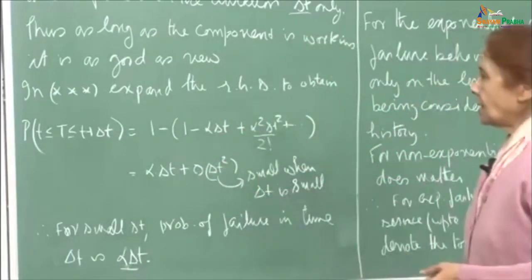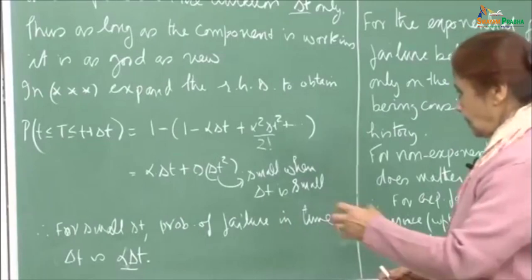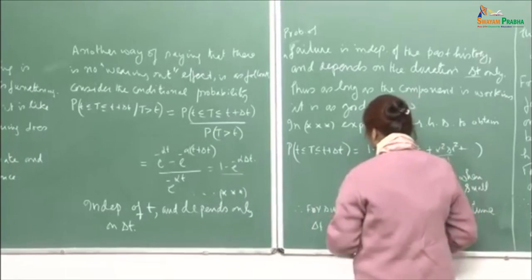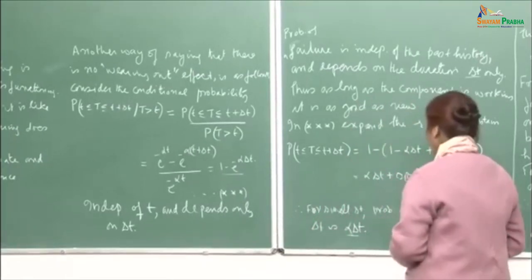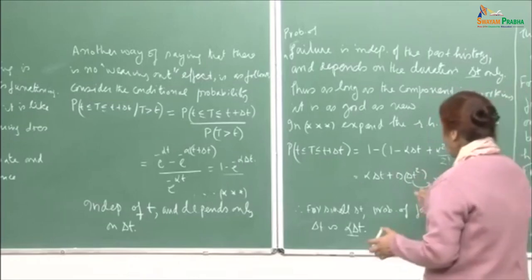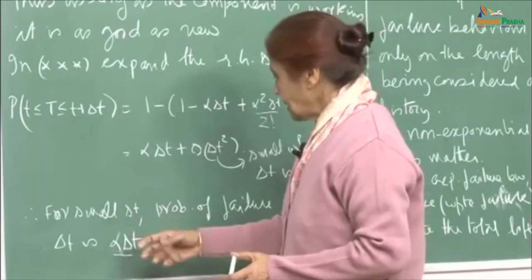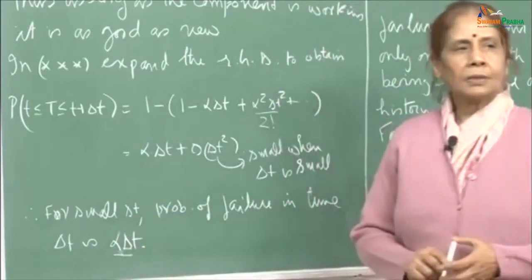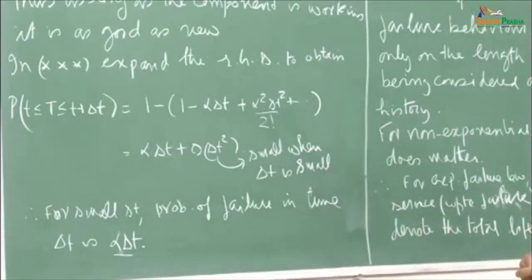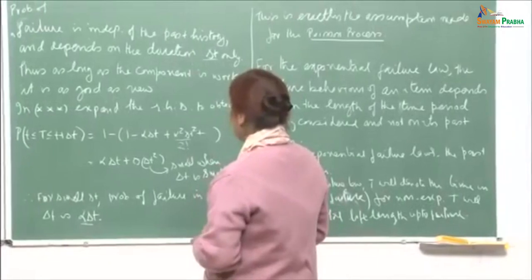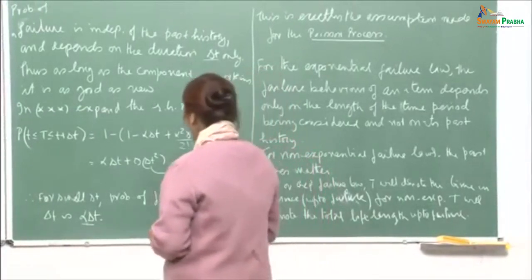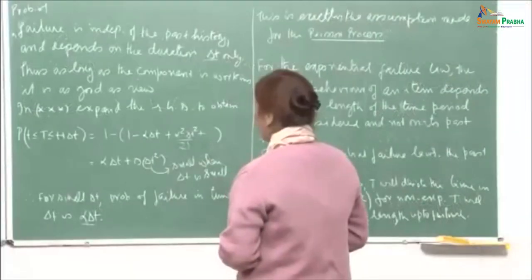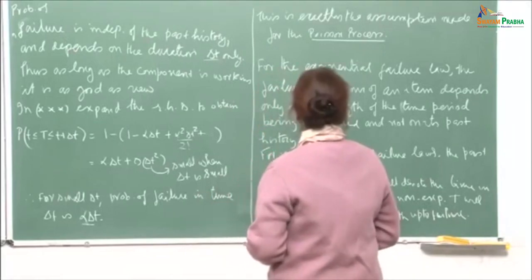This is what we have been saying all along. In fact, in a small interval — no matter where that interval is — the probability of a failure in that time period is proportional to delta T itself. This is nothing but your Poisson process; this is one of the basic assumptions of the Poisson process. Suppose you have an electronic device with many components that follow the same exponential failure law with the identical distribution — that is, the same parameter lambda.